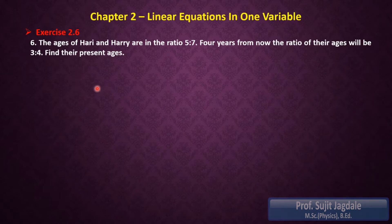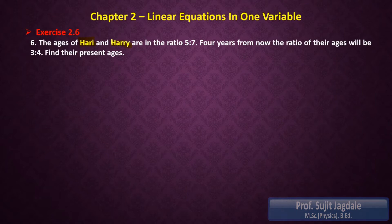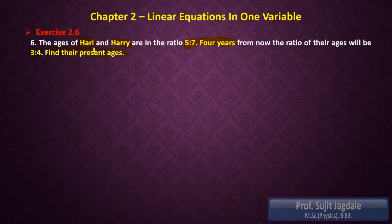The first example is: ages are in the ratio 5 is to 7, so the ratio of their present ages is given. Four years from now — that means after 4 years, we have to add this value — the ratio of their ages will be 3 is to 4, and we have to find out their present ages.